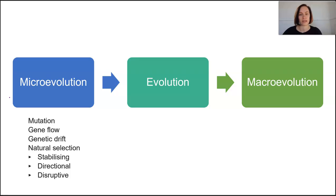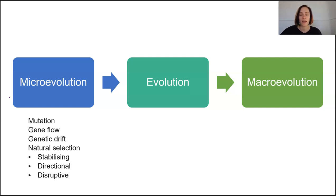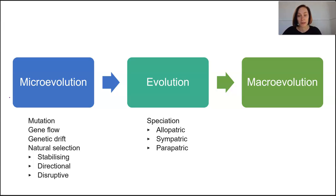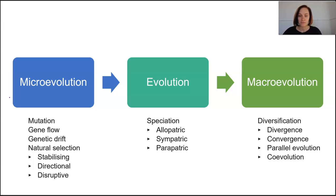The modes of natural selection include stabilizing, directional, and disruptive selection. Eventually over time, populations can become reproductively isolated from one another, and through a range of modes of speciation, species can diverge from one another completely. As we zoom out to look at a larger scale, we have to consider that over time different species begin to diverge further.